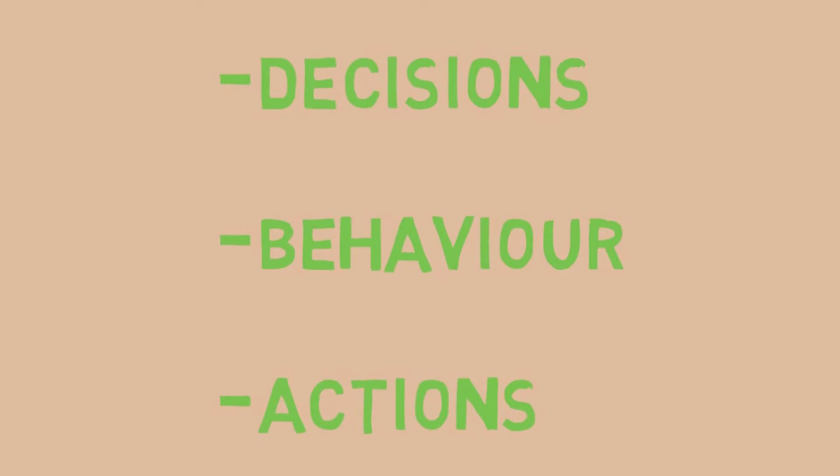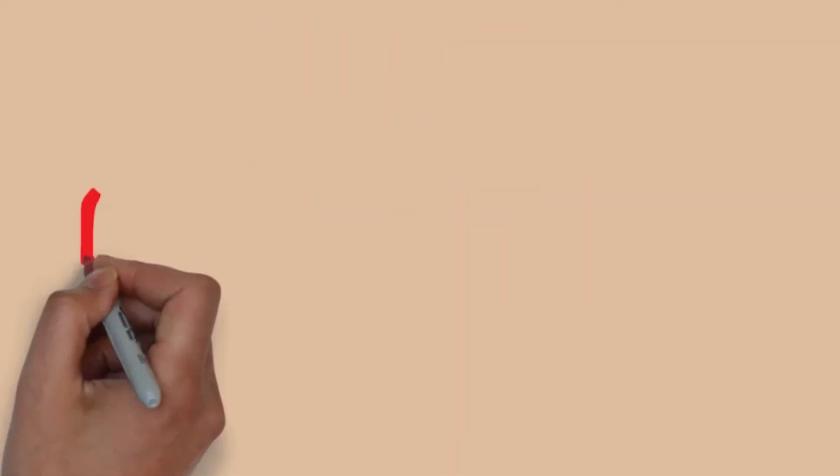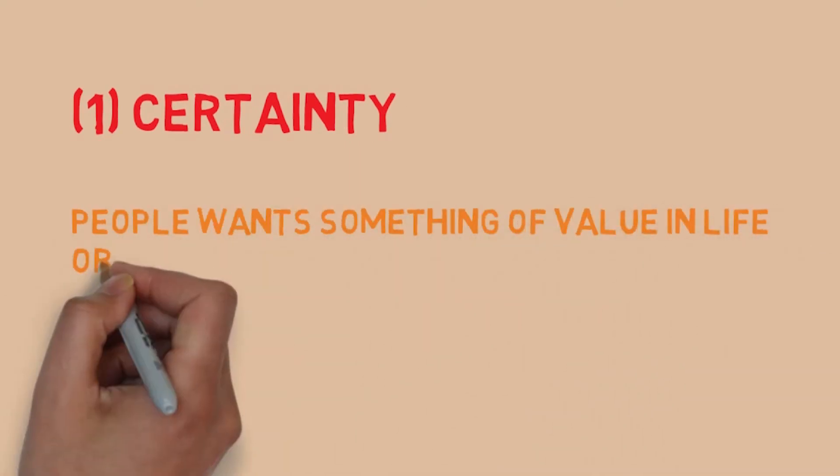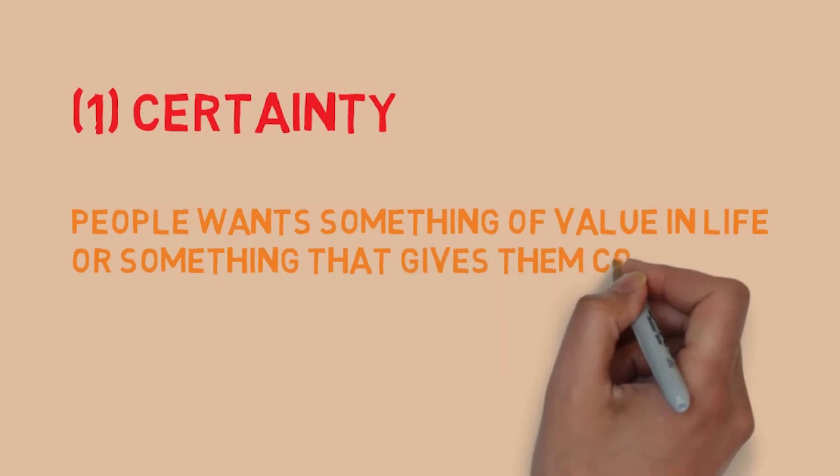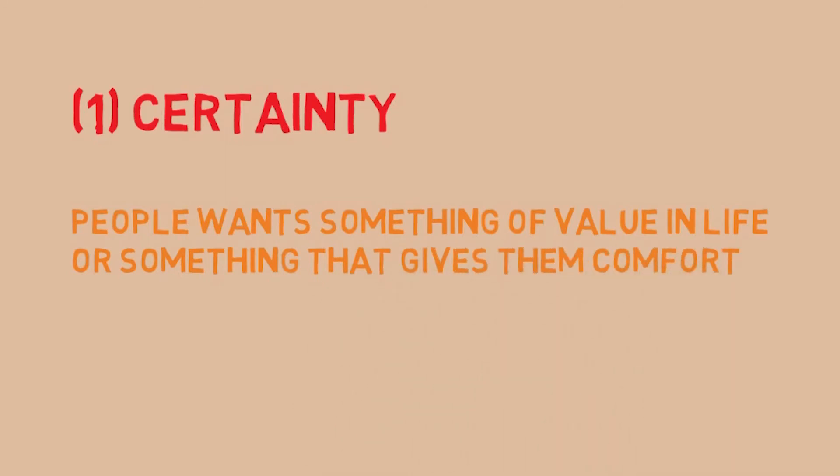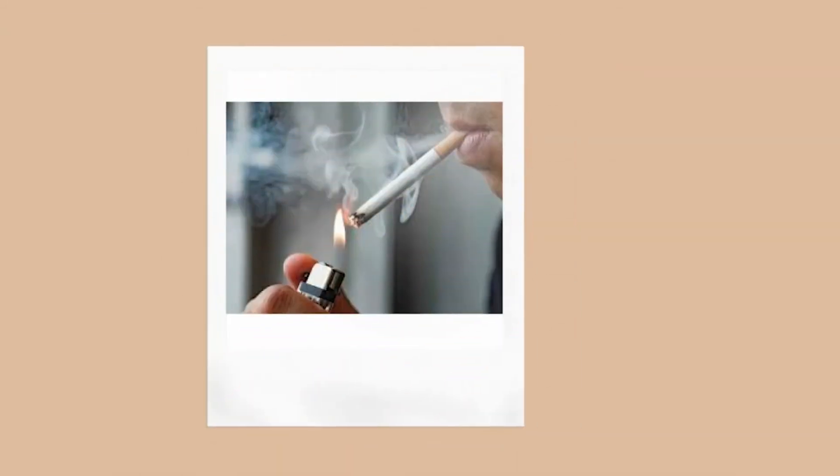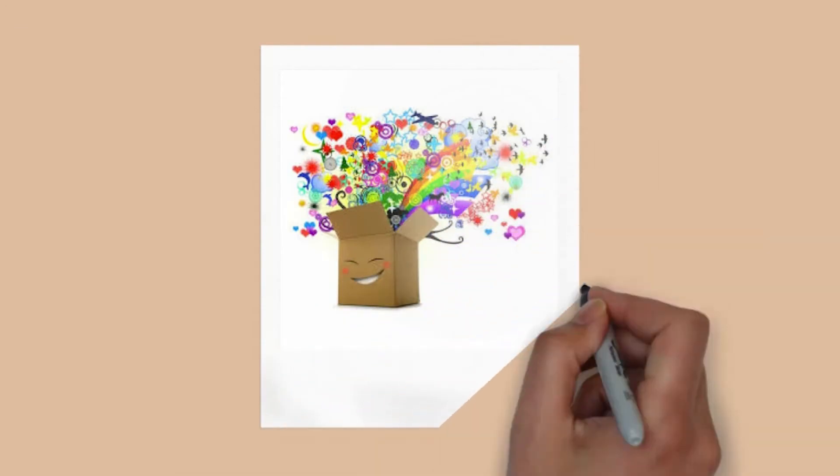take decisions, behavior, and actions. So the very first need is certainty. People want something of value in life or something that gives them comfort. This can be anything like food, cigarettes, being in a relationship—anything that makes us feel